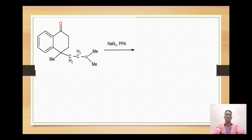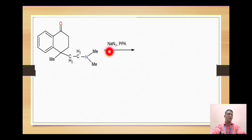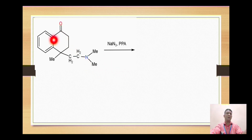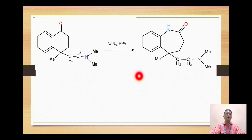The next example: a compound containing two rings — a benzene ring attached to a cyclohexanone ring — when treated with sodium azide in the presence of polyphosphoric acid, gives formation of a cyclic amide. In this case, the NH group is inserted between the aromatic carbon and the carbonyl carbon. The nitrogen from sodium azide gets inserted between the aromatic ring carbon and the carbonyl carbon, forming a cyclic amide.